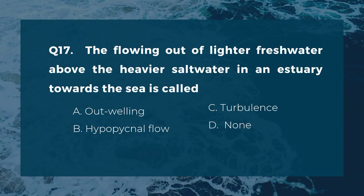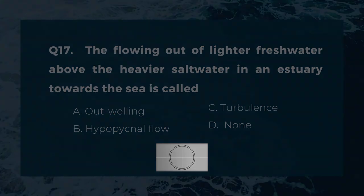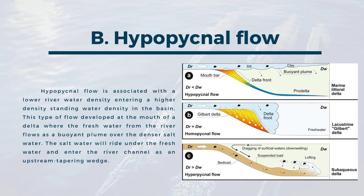Question seventeen: the flowing out of lighter fresh water above the heavier salt water in an estuary towards the sea is called. A) outwelling, B) hypopygnal flow, C) turbulence, D) none. The correct answer is B, hypopygnal flow. Hypopygnal flow is associated with a lower river water density entering a higher density standing water in the basin. This type of flow develops at the mouth of a delta where the fresh water from the river flows as a buoyant plume over the denser salt water; the salt water rides under the fresh water and enters the river channel as an upstream tapering wedge.